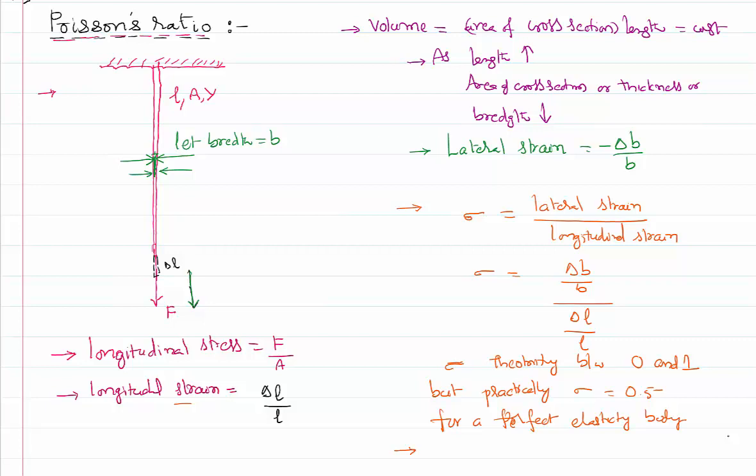For any real bodies, real time bodies which are not perfectly elastic, because no body is really perfectly elastic - it is not possible to get something perfectly elastic in nature. Therefore, for real bodies the value of the Poisson's ratio is greater than 0 but less than or equal to 0.5.